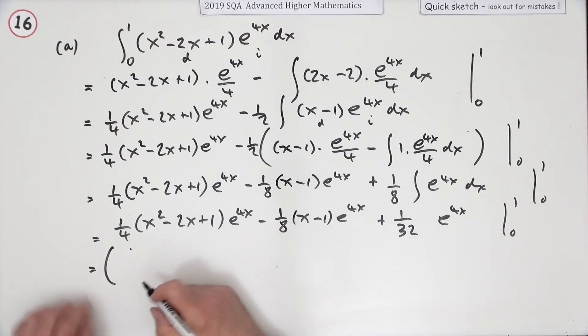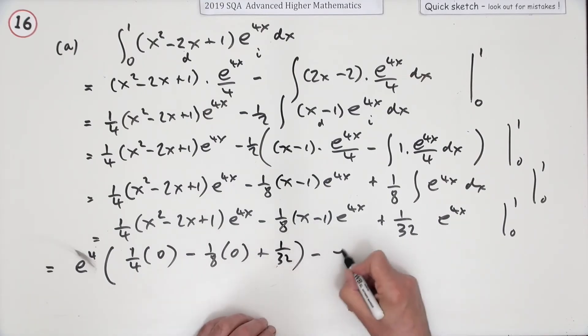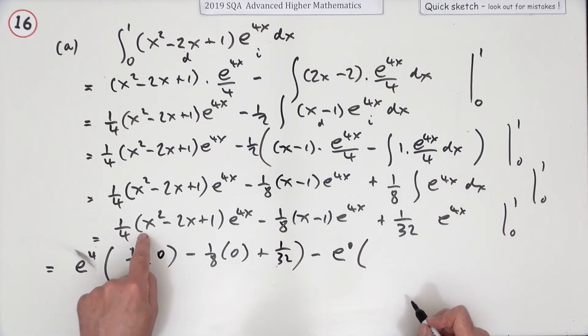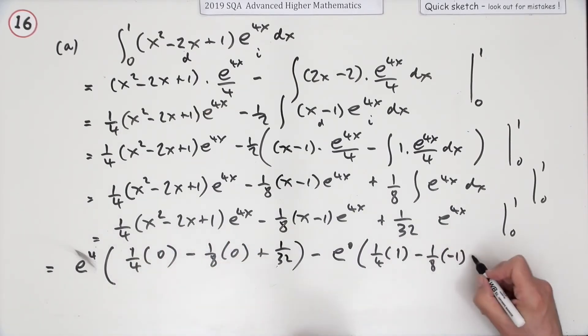So I've got, I can take all the e to the 4s, that 4x is, out of course I can do that. So e to the 4x means e to the 4 times this part first of all. So what have we got inside it? We've got one quarter of, and that's 1 plus 1 take away 2, that's nice, that's a 0. And that's also going to be a 0 minus an eighth of 0, but that's plus 1 upon 32 unfortunately. Minus now it's going to be e to the 0, now the same again with 0s in it. So that's going to be a quarter of 1 minus an eighth of negative 1, but still plus 1 upon 32.